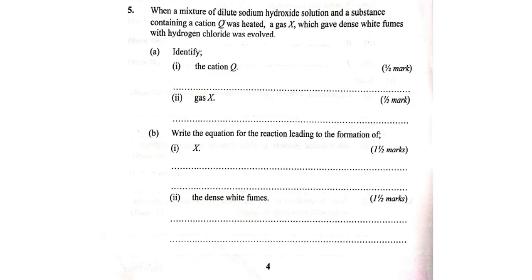When a mixture of dilute sodium hydroxide solution and a substance containing a cation was heated, a gas X which gave dense white fumes with hydrogen chloride was evolved. Question A asks us to identify the cation. Remember, cation is a positively charged ion, the cation cube.